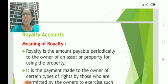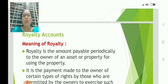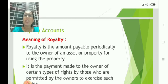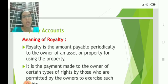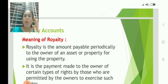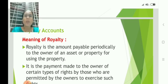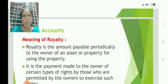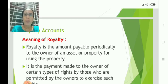Now let us go through this theory part systematically. Royalty is the amount payable periodically to the owner of an asset or property for using that property. It is not a sale — the property is not being sold here. The property is just given for usage.